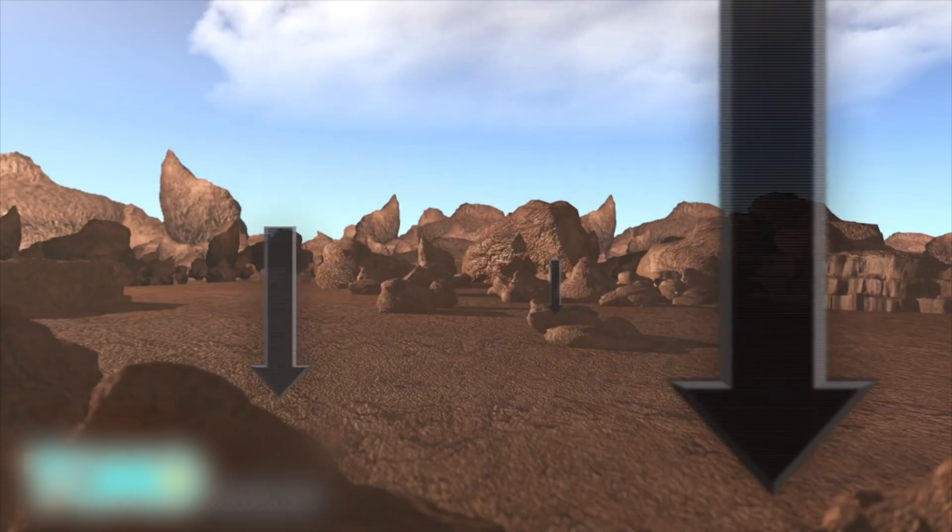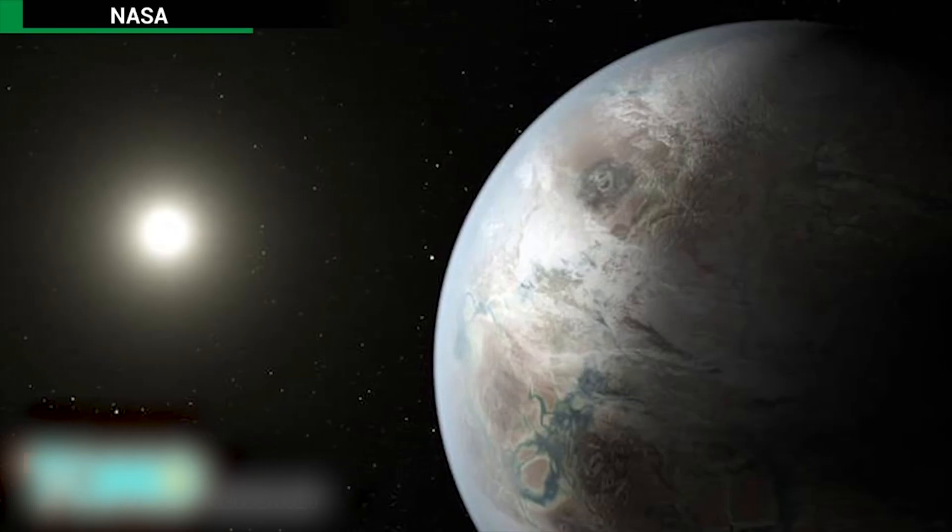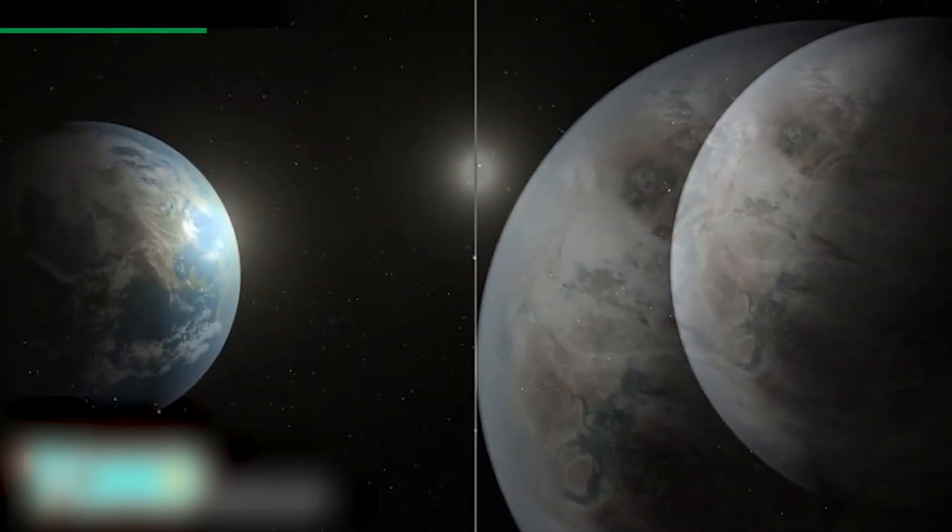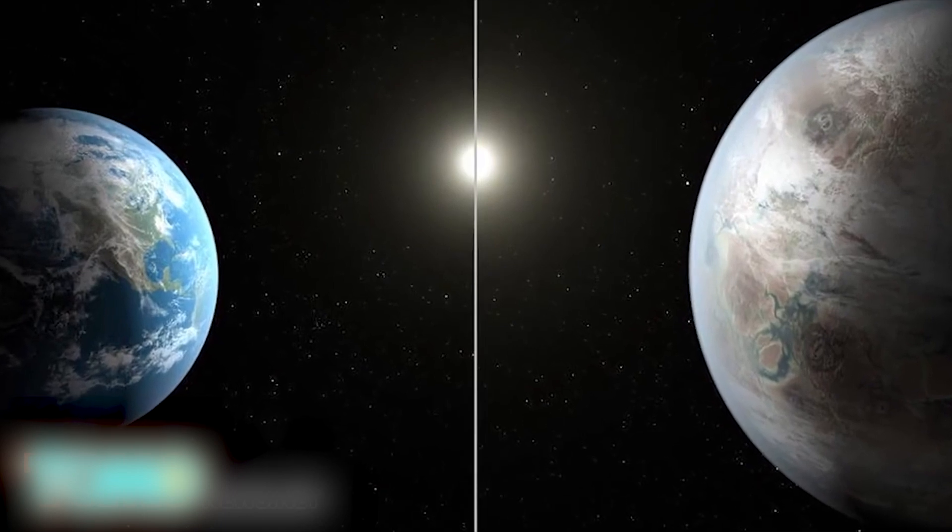Gravity would be about twice as strong on Kepler-452b as it is on Earth. NASA is planning to do a spectroscopic analysis of the exoplanet to gain a better understanding of its atmosphere.